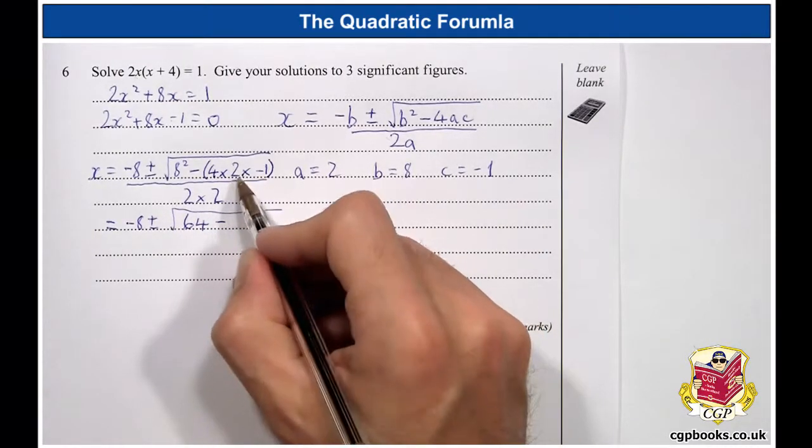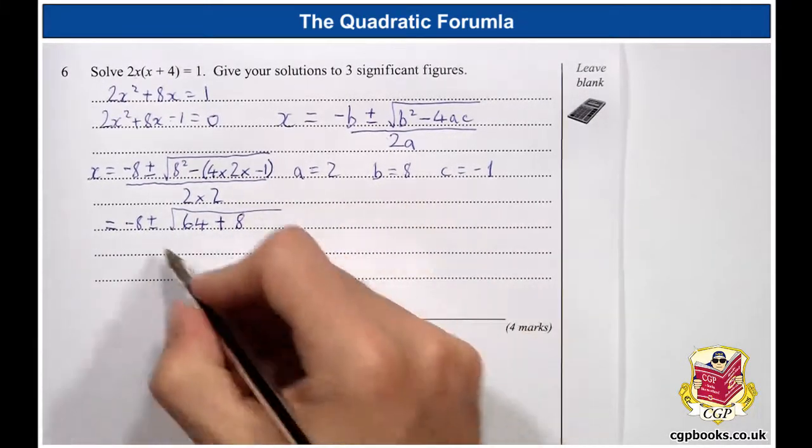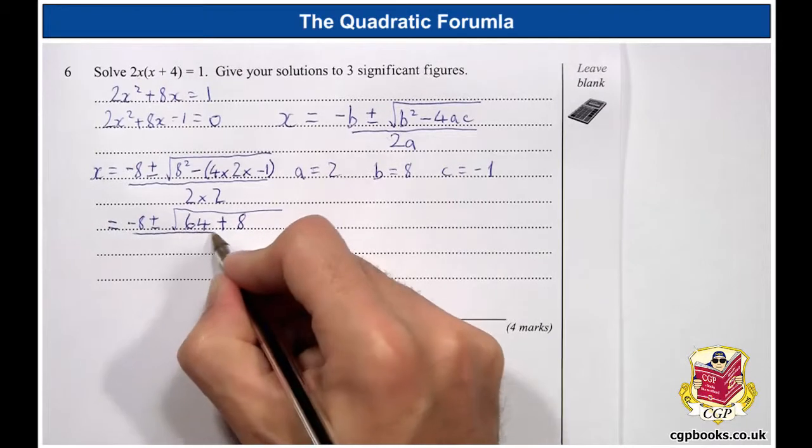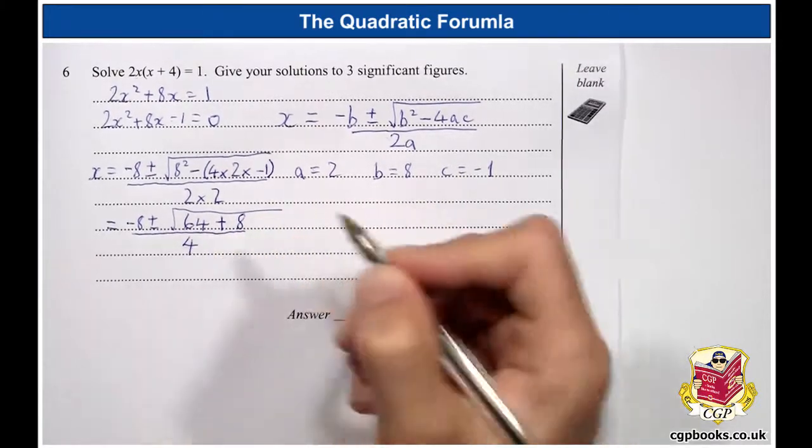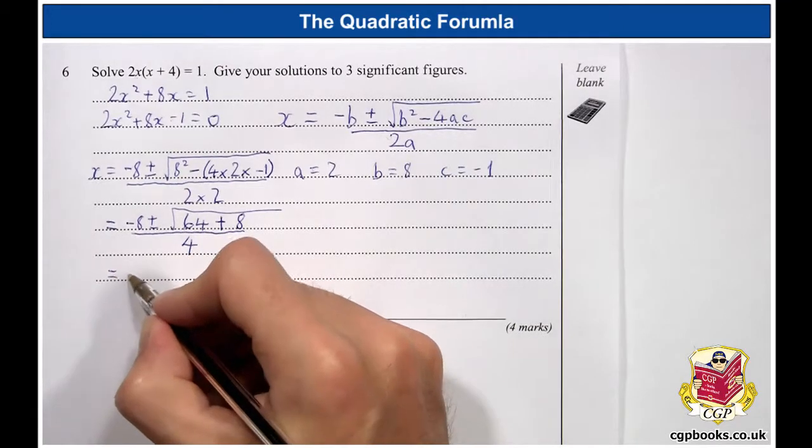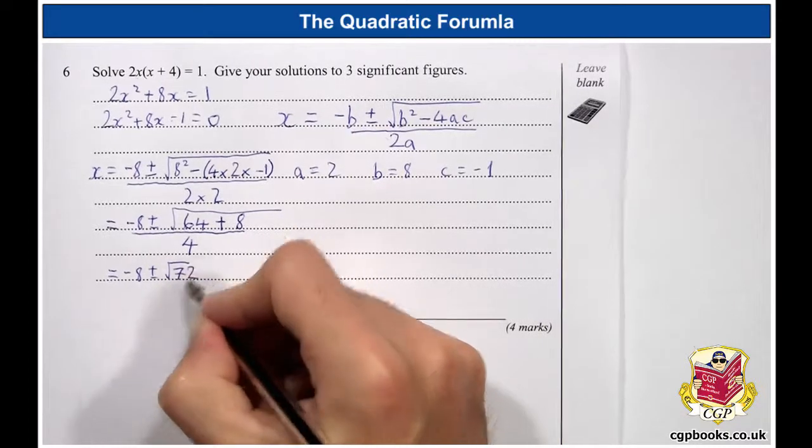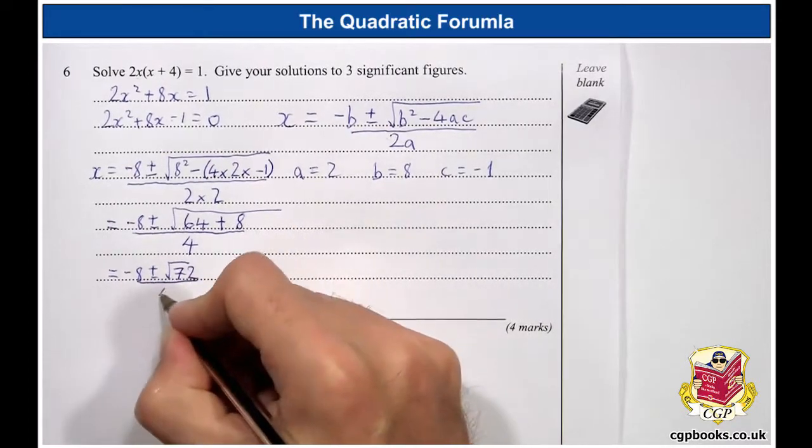So, that's minus 8. So, we've got minus minus 8, so it's actually plus 8. Minus 8 over 2 times 2, which is 4. So that is actually minus 8 plus or minus root 72 over 4.